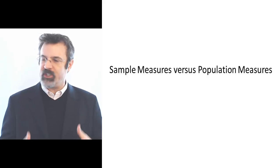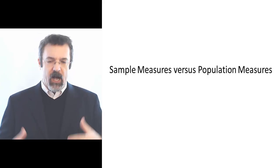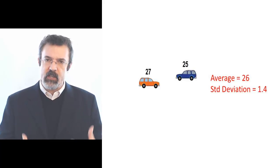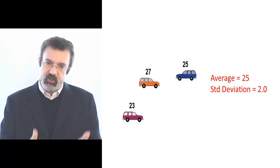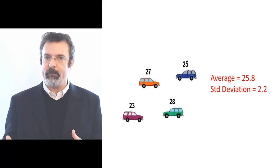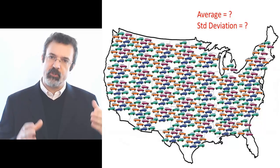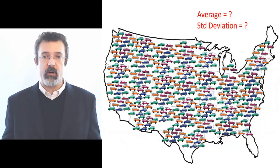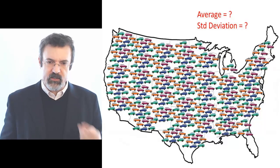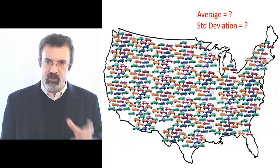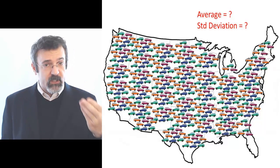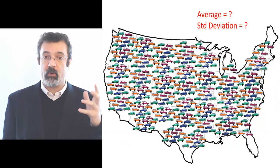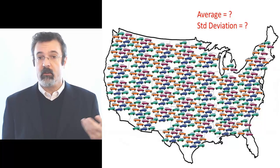Suppose I want to know the average gas mileage that cars get. I can collect a sample of cars and measure the mileage that these cars get and say something about the average mileage of this sample. What I can't talk about is the population average mileage, because that would require collecting mileage information on every car that exists. This is a frequent problem in statistics: we can readily observe measures about samples, but what we really want to know are the measures of the populations, and we can't know those without collecting more information than we can afford to collect.